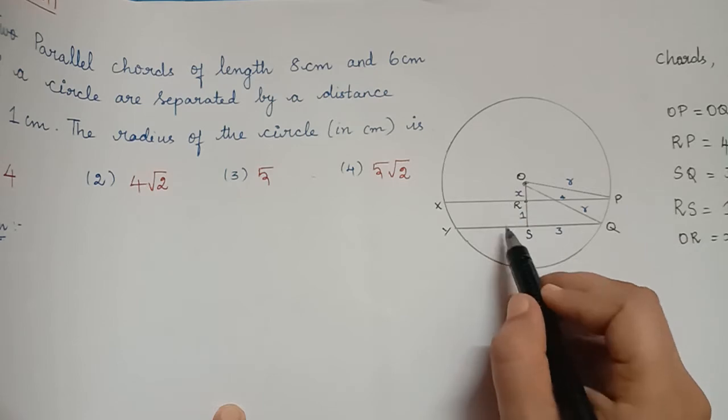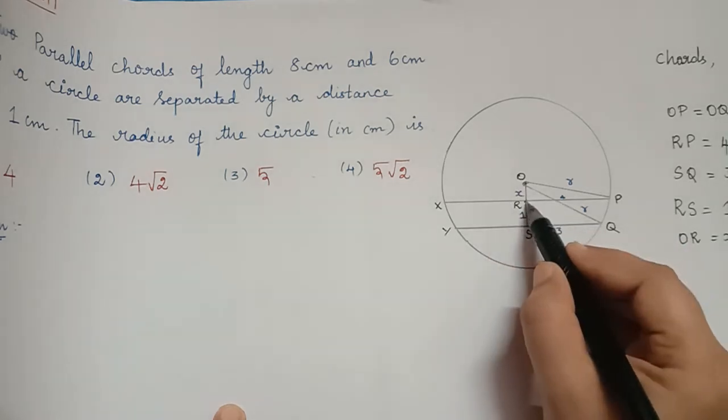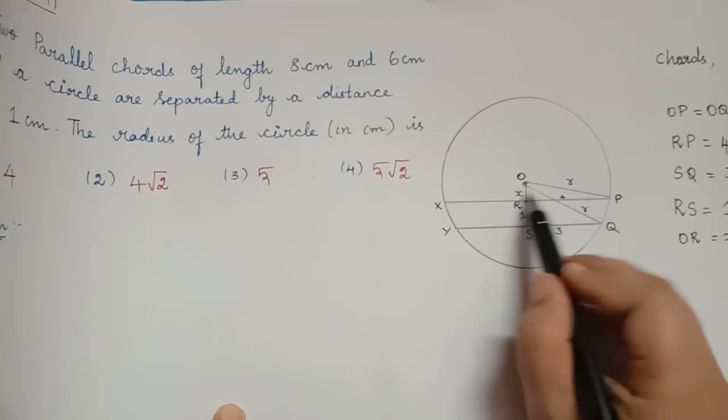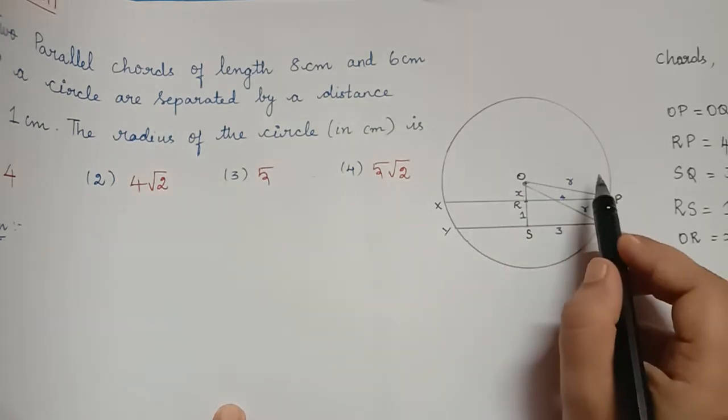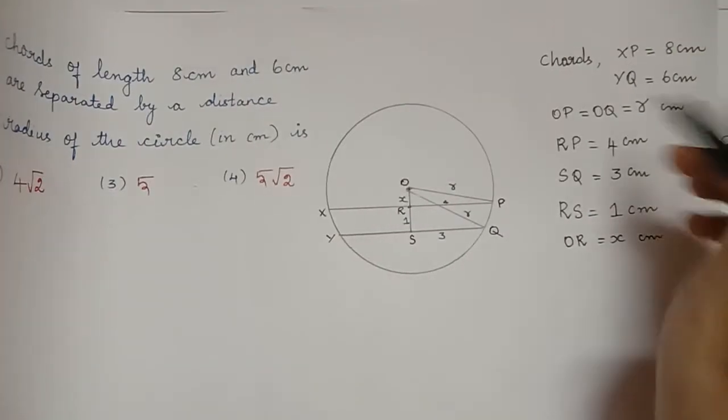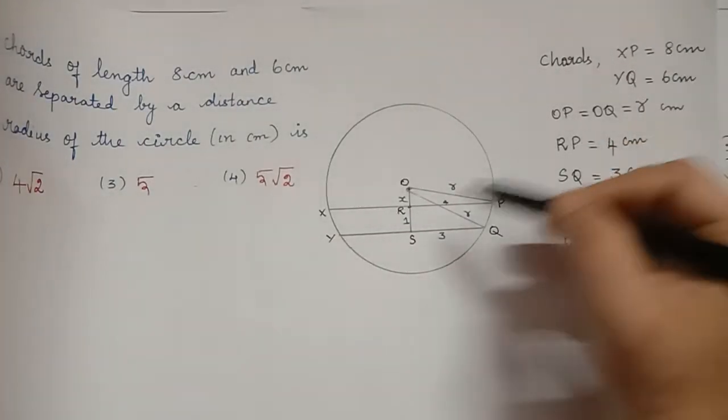The two chords are separated by a distance of 1 cm. Now, OP and OQ gives us the radius of the circle. So, these are what we infer from the diagram.